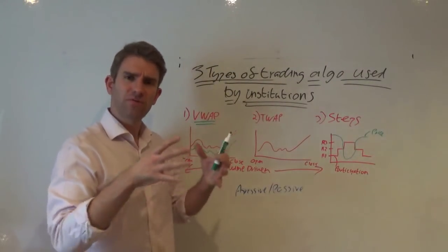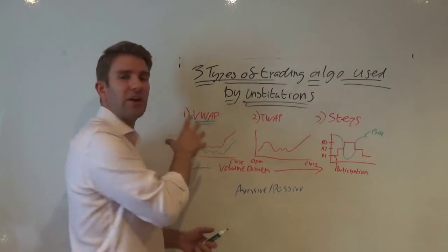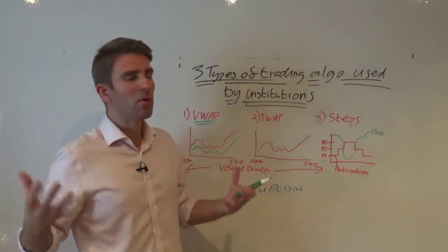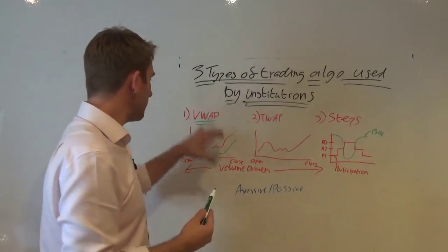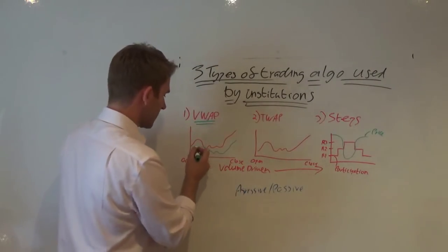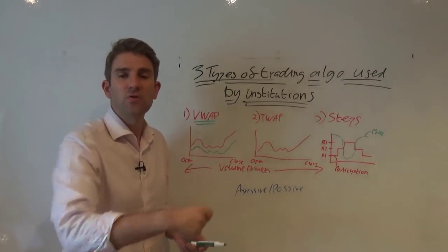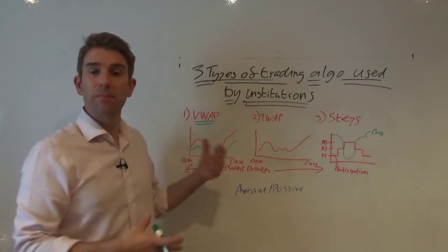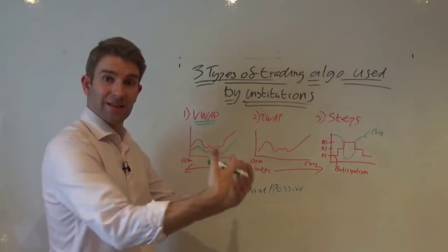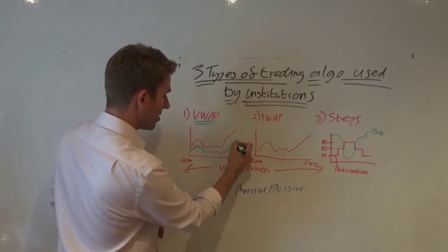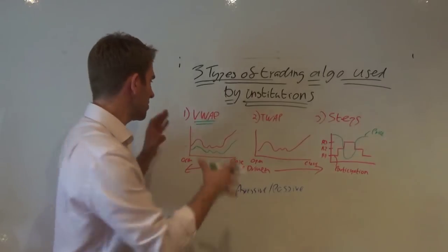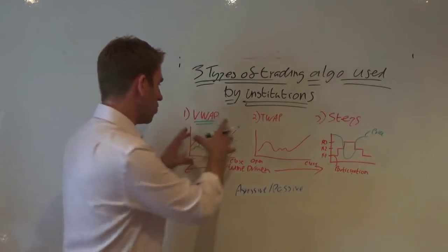With VWAP, the algo bases its decisions on the historic volume profile for that market. It says: 'What's the typical volume profile for this instrument?' It works very well for thick, very liquid instruments — like futures on indices, thick commodities, and high-volume stocks. It knows the total amount to execute, so it works out what percentage to do at each period. The benefit is it minimizes price impact: it executes more volume when the market can handle it, rather than smacking a big order in all at once.